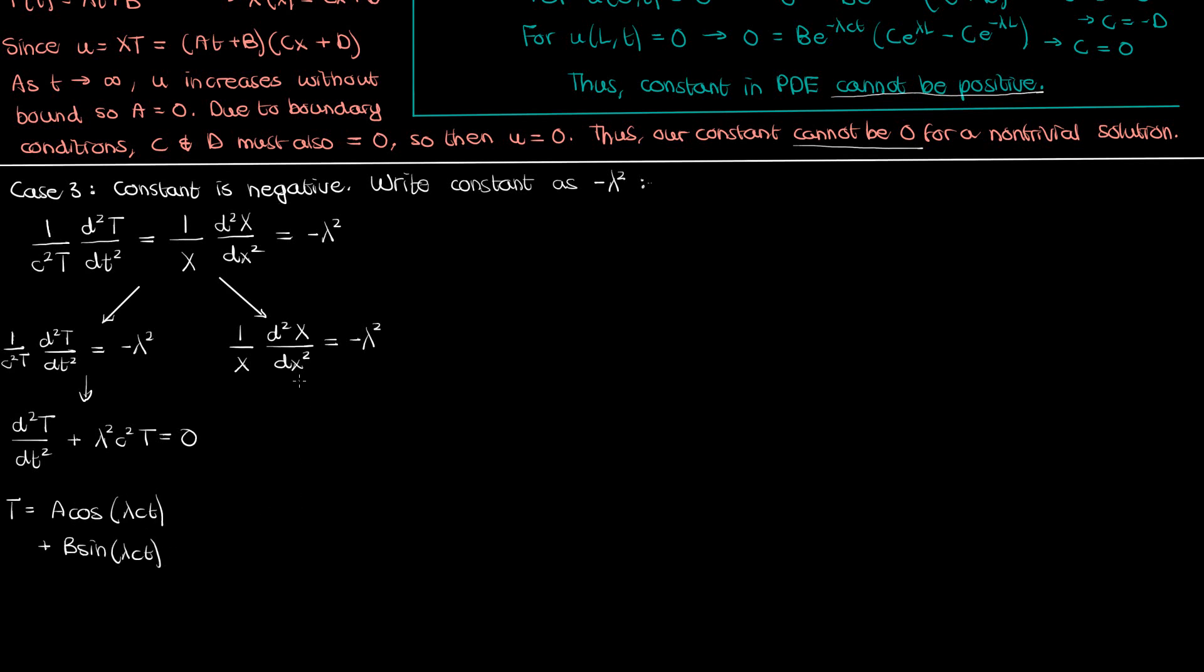Note here that a and b are arbitrary integration constants. Similarly for the ODE involving capital X we have the second derivative of capital X with respect to x plus lambda squared capital X equals 0 which means that once again the solution capital X is a sum of sines and cosines. c cosine lambda X plus d sine lambda X where c and d are again arbitrary constants.